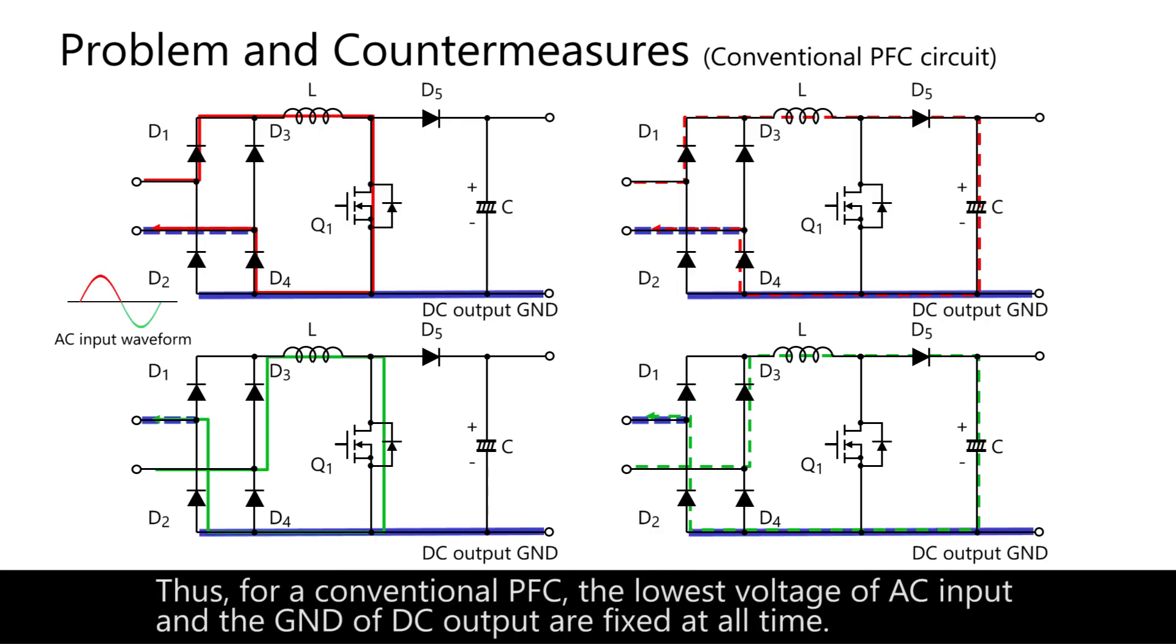Thus, for a conventional PFC, the lowest voltage of AC input and the ground of DC output are fixed at all times.